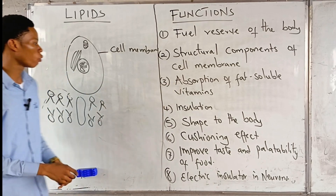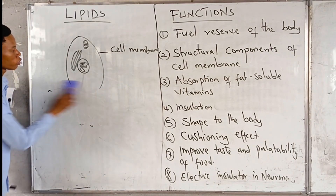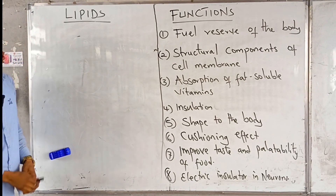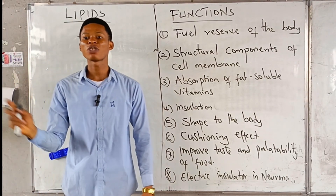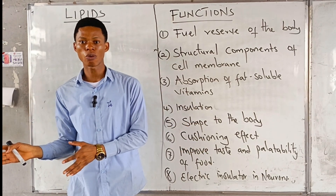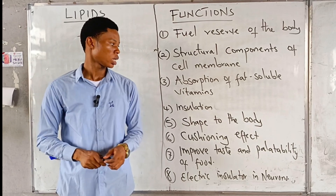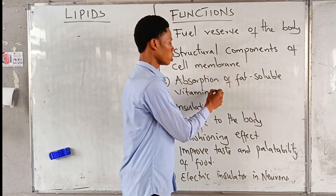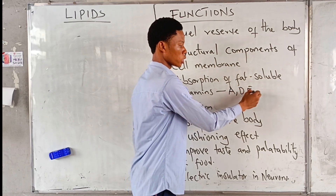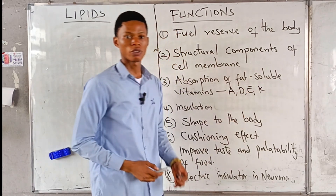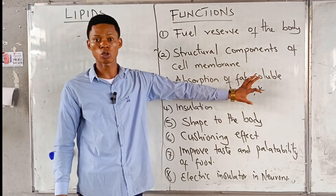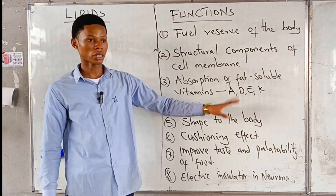The next function is the absorption of fat-soluble vitamins. Vitamins are classified into two: water-soluble vitamins and fat-soluble vitamins. The fat-soluble vitamins are vitamins A, D, E, and K. Vitamin is a topic on its own — it's classified into these two groups.